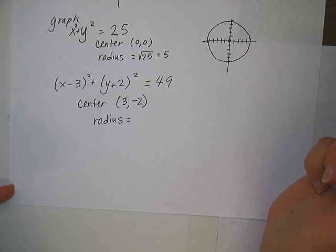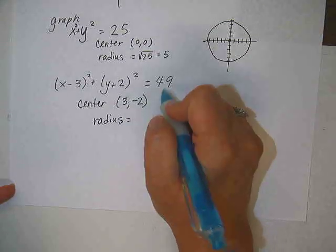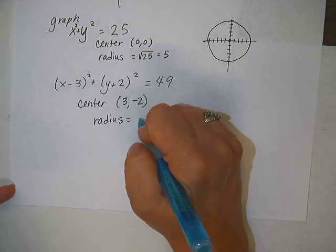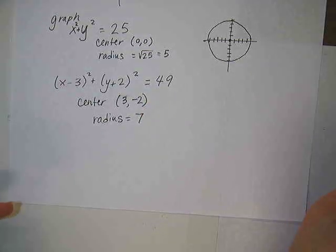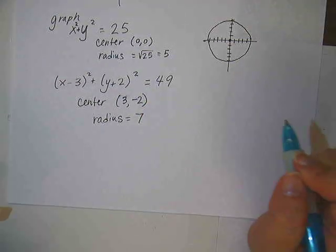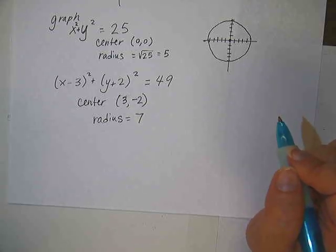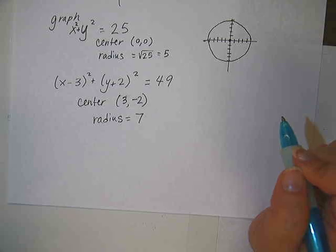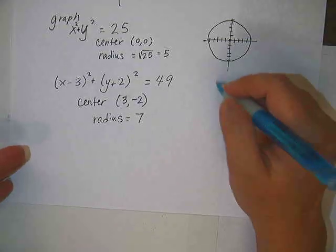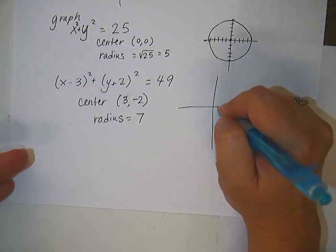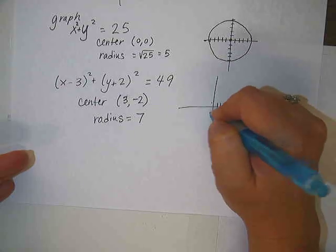Good. And then how do we find the radius? Square root of 49. Good. So square root of 49 would be 7. How come I don't do a plus or minus 7? Because we are talking about the radius of a circle, which is a distance, and we will never have a negative number for that.